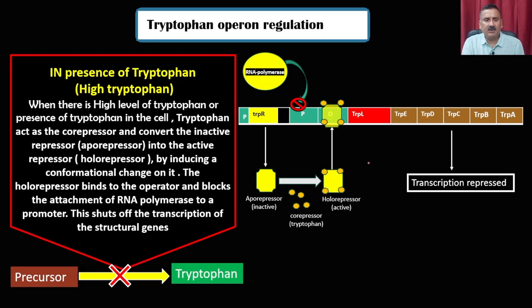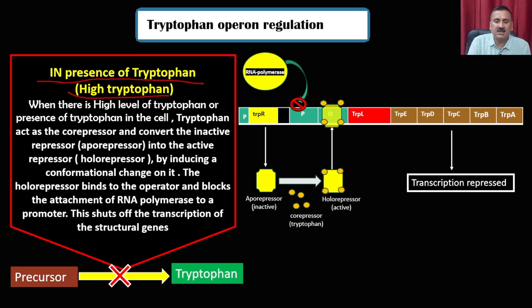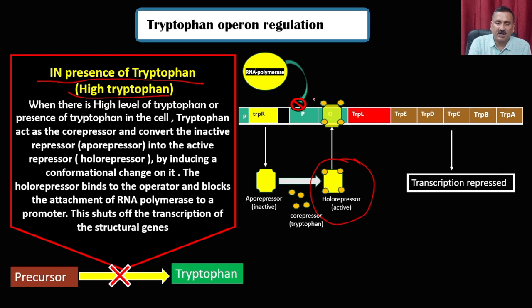In the presence of high tryptophan, things are reversed: tryptophan binds to the repressor protein, forming an active repressor. The active repressor binds to the operator, preventing RNA polymerase from accessing the promoter and completing transcription — resulting in low transcription when tryptophan is present.